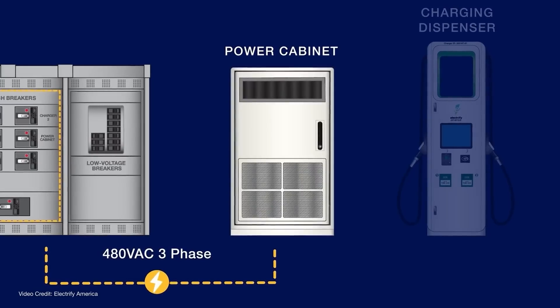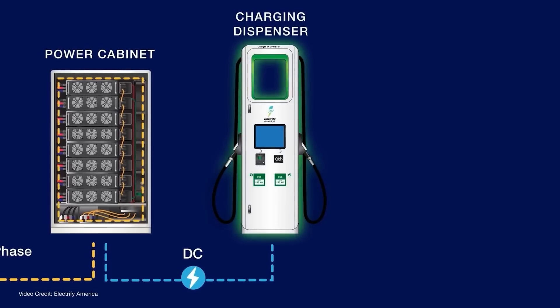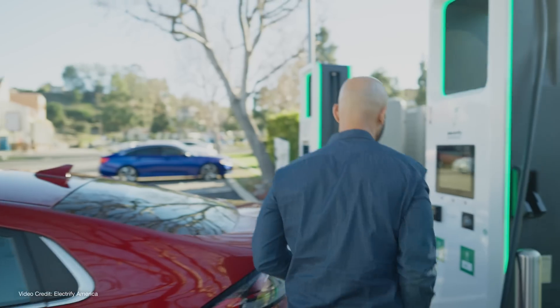Most modern BEVs can DC fast charge, though the maximum rate varies enormously from model to model, and a small number of PHEVs can do so as well. When using a DC fast charger, the charging unit is in the charging station, not the car. If AC charging is a garden hose, DC fast charging is a fire hose, and it's what enables electric cars to do long road trips. It's worth noting that DC fast charging tends to be about as costly per mile as fueling a reasonably efficient ICE car, whereas AC charging is usually far cheaper. But the overwhelming majority of charging happens on AC electricity for nearly every EV owner.